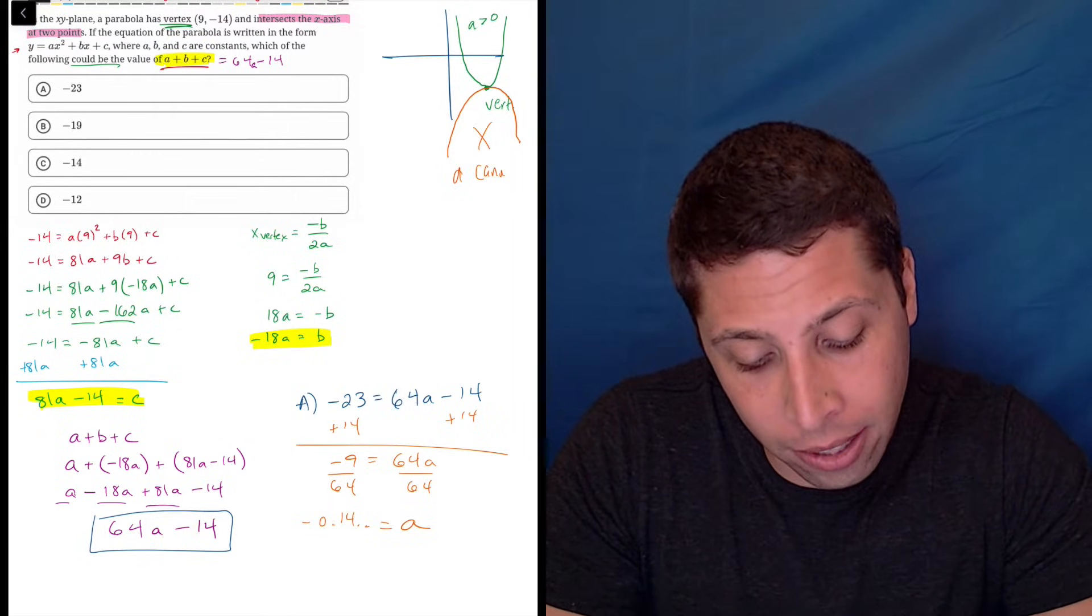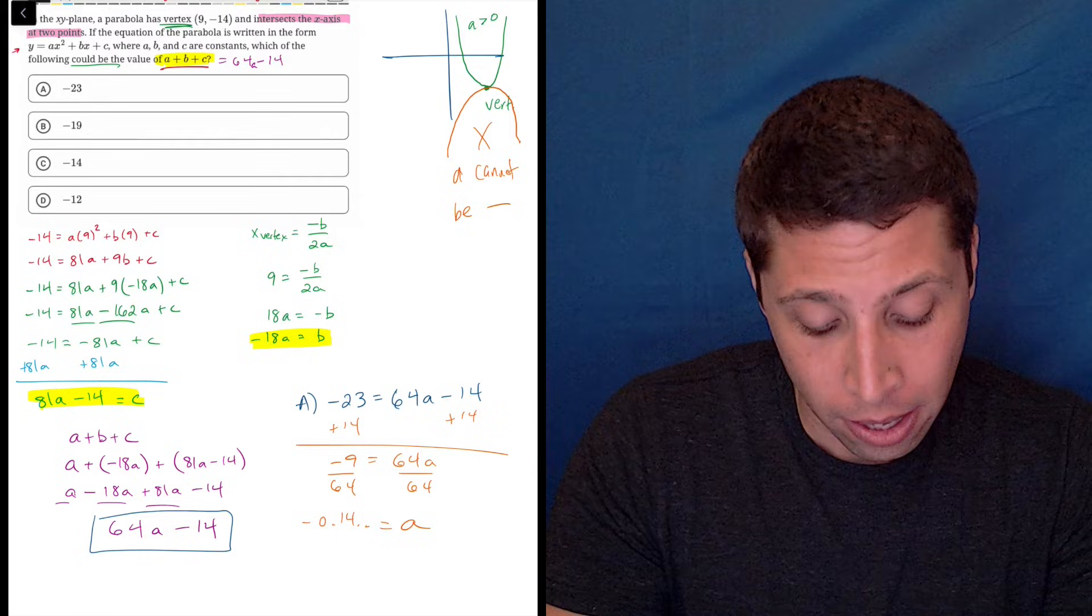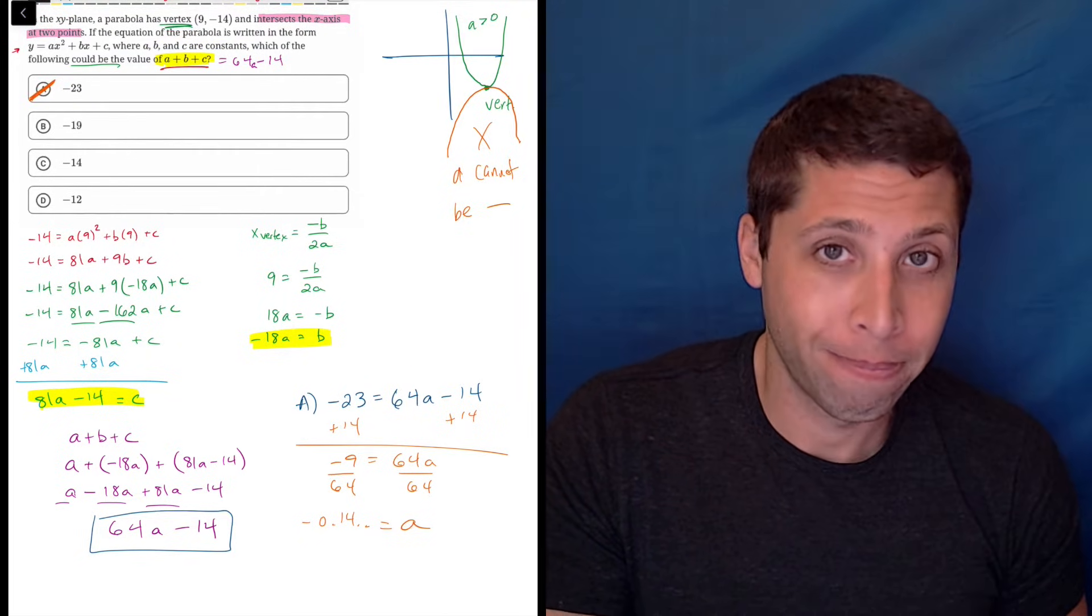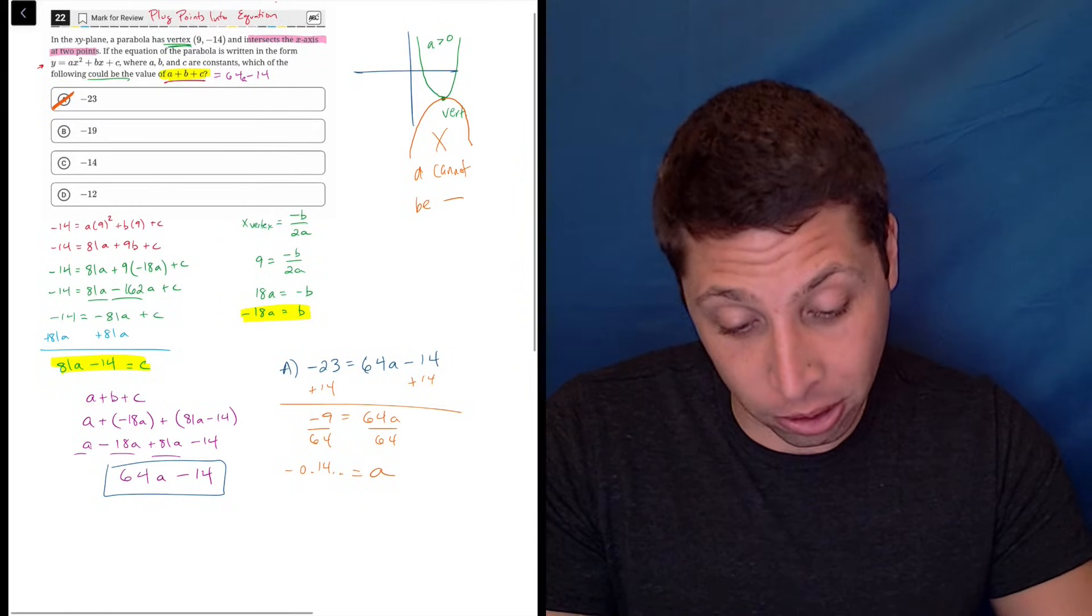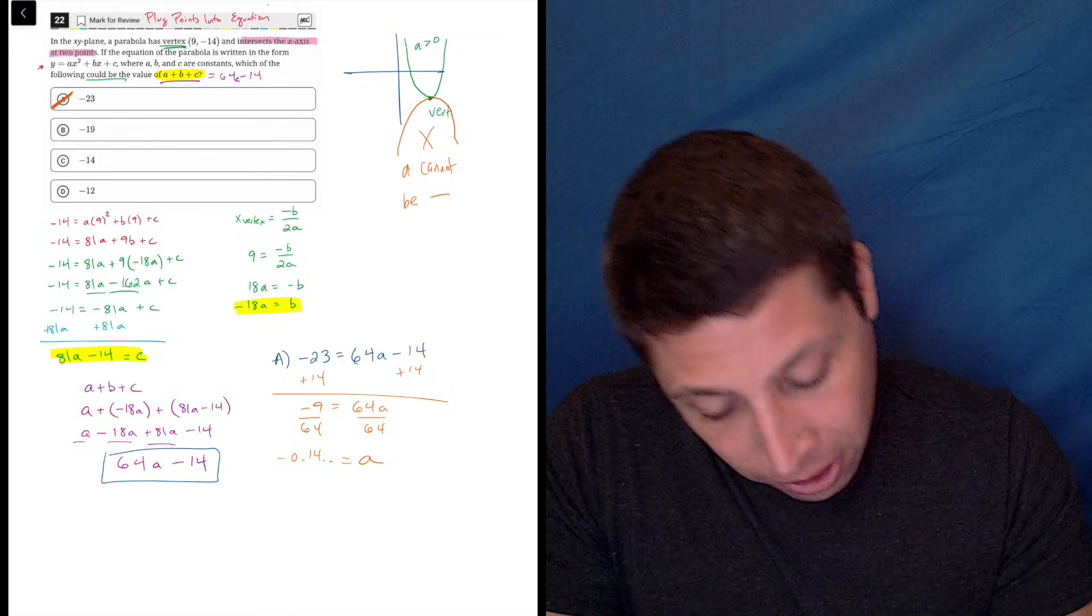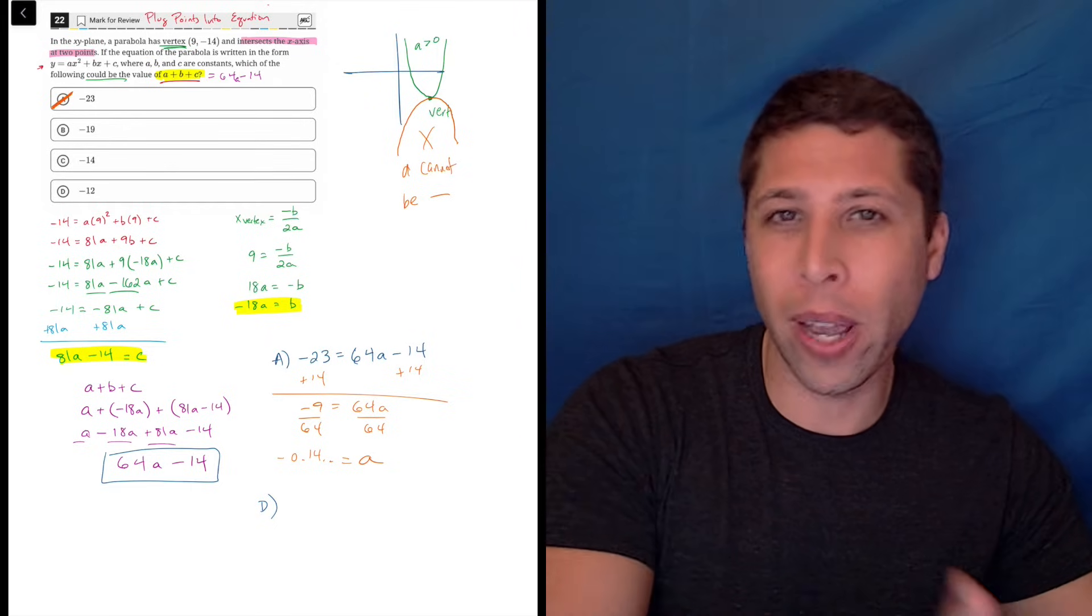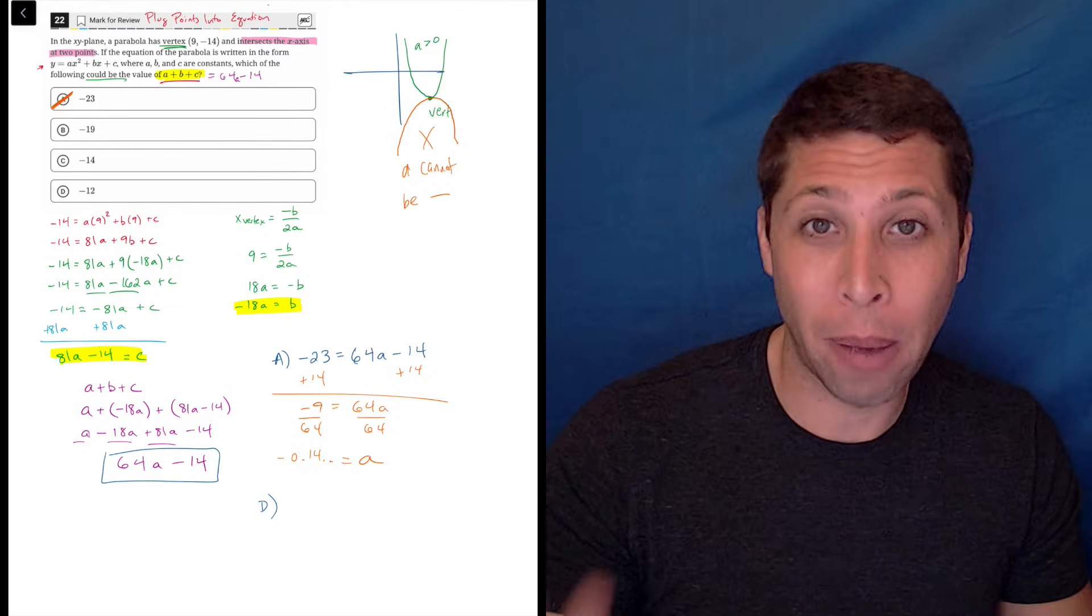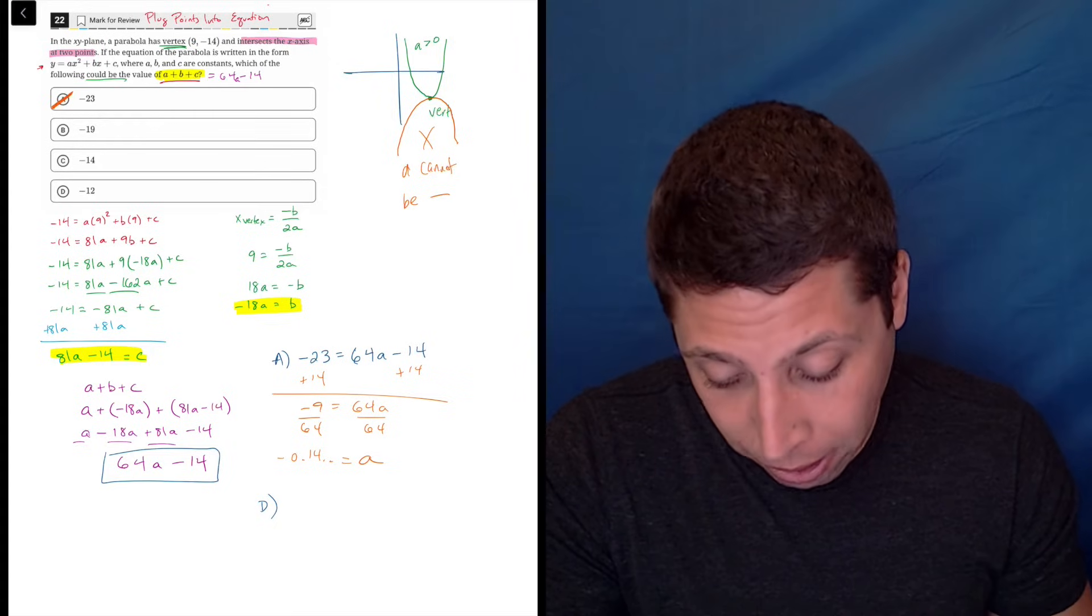So choice A would only work if A were this negative number. It's a lot. It's a lot to juggle. So basically, we're going to have to try different answer choices. Now, I'm going to skip to the right answer because this is already going on long enough. We're going to skip to choice D. And I'd probably do this anyway just because when we have these kind of questions where there's like a range of possibilities, usually the way it works is the end of the range is kind of the answer. So I would go with my biggest or my smallest answer choices and kind of see what they do. And usually one of them will be right. So let's try the negative 12.